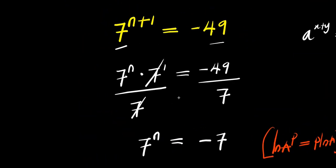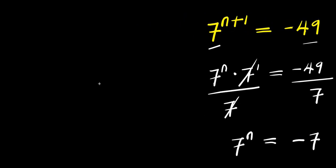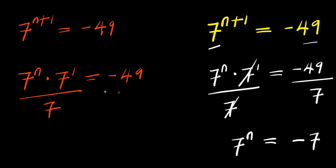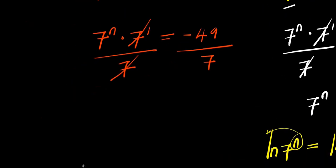Now we can also solve this using Euler's identity, where negative 1 equals e to the power of i times pi. We have 7 to the power of n plus 1 equals negative 49. Applying the same exponential identity, 7 to the power n times 7 to the power 1 equals negative 49. Dividing both sides by 7, we get 7 to the power n equals negative 7.